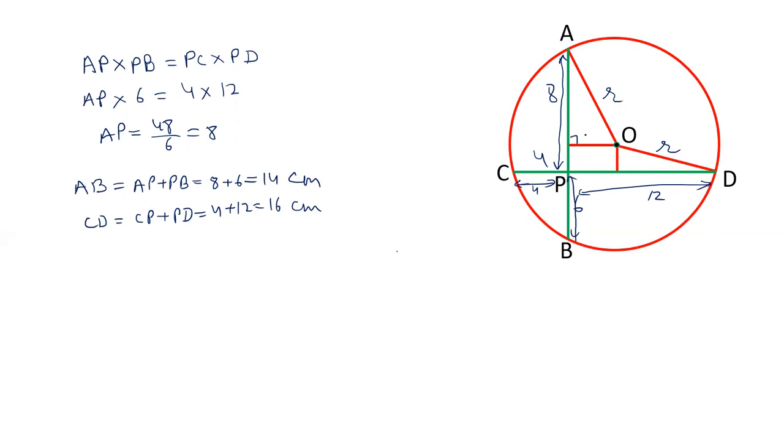Now, as we have drawn the perpendicular, there is a property. And the property is perpendicular from the center to the chord bisects the chord. If I take M, then if OM is perpendicular to AB, then AM is equal to MB. This is the property of the circle. Using this property, let's find out the values.